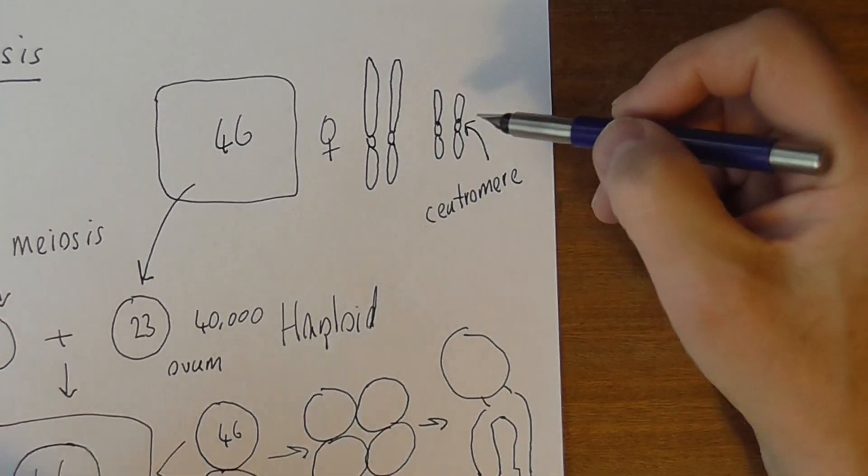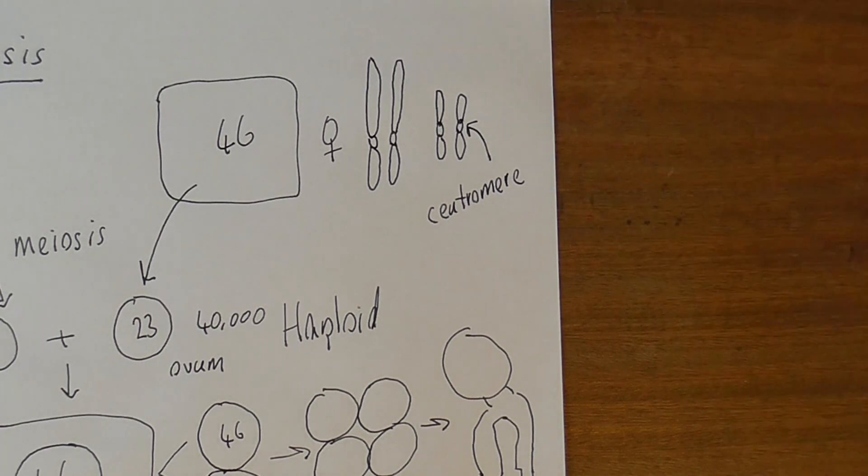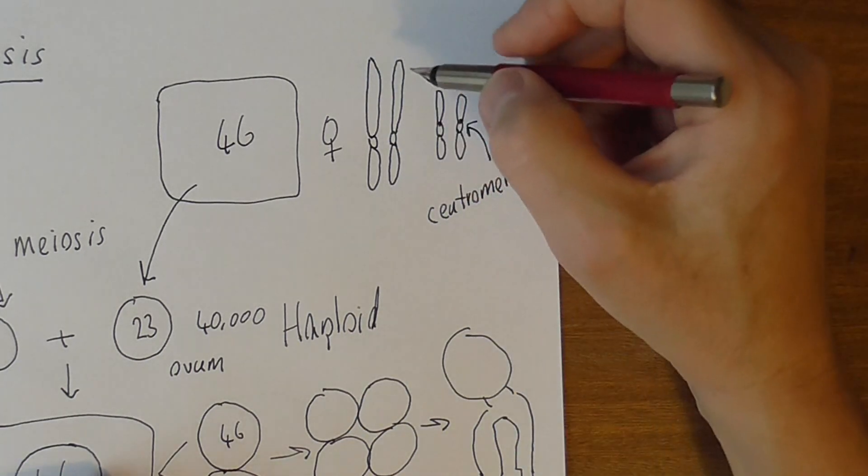So you get bigger and smaller chromosomes. This bit in the middle here that joins the chromosomes is the centromere. That joins the long and the short arms of the chromosomes.